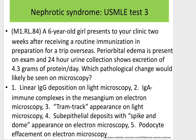Test 3: A 6-year-old girl presents to her clinic two weeks after receiving a routine immunization in preparation for a trip overseas. Periorbital edema is present on exam. A 24-hour urine collection shows excretion of 4.3 grams of protein per day. Which pathological change would likely be seen on microscopy? (1) Linear immunoglobulin G deposition on light microscopy, (2) Immunoglobulin A immune complexes in the mesangium on electron microscopy, (3) Tram-track appearance on light microscopy, (4) Subepithelial deposits with spike-and-dome appearance on electron microscopy, (5) Podocyte effacement on electron microscopy.